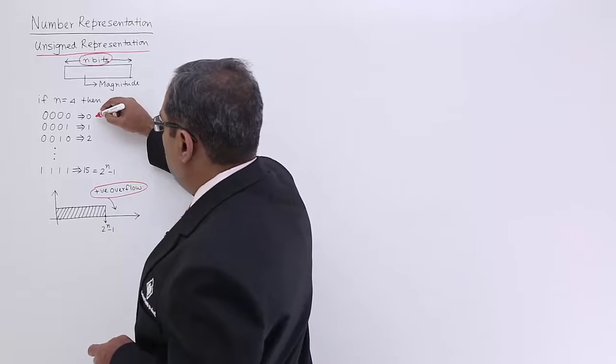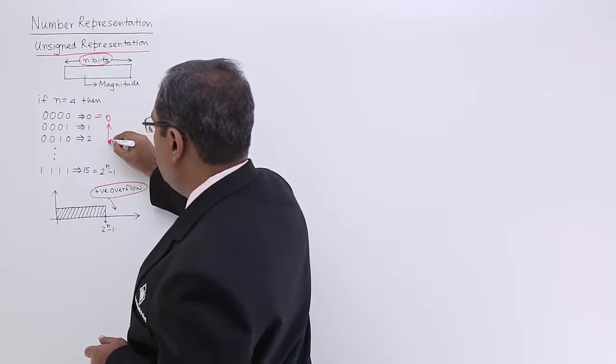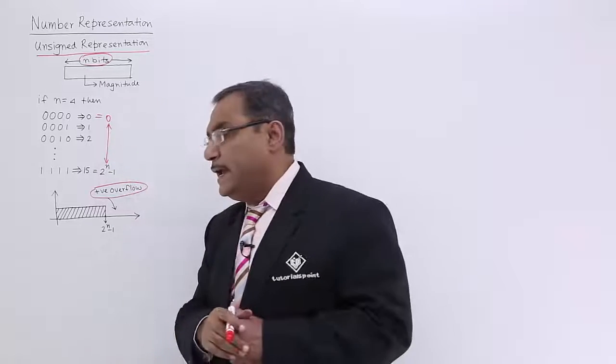What is the lower limit? The lower limit is 0. And what is the upper limit? The upper limit is 2 to the power of n minus 1.